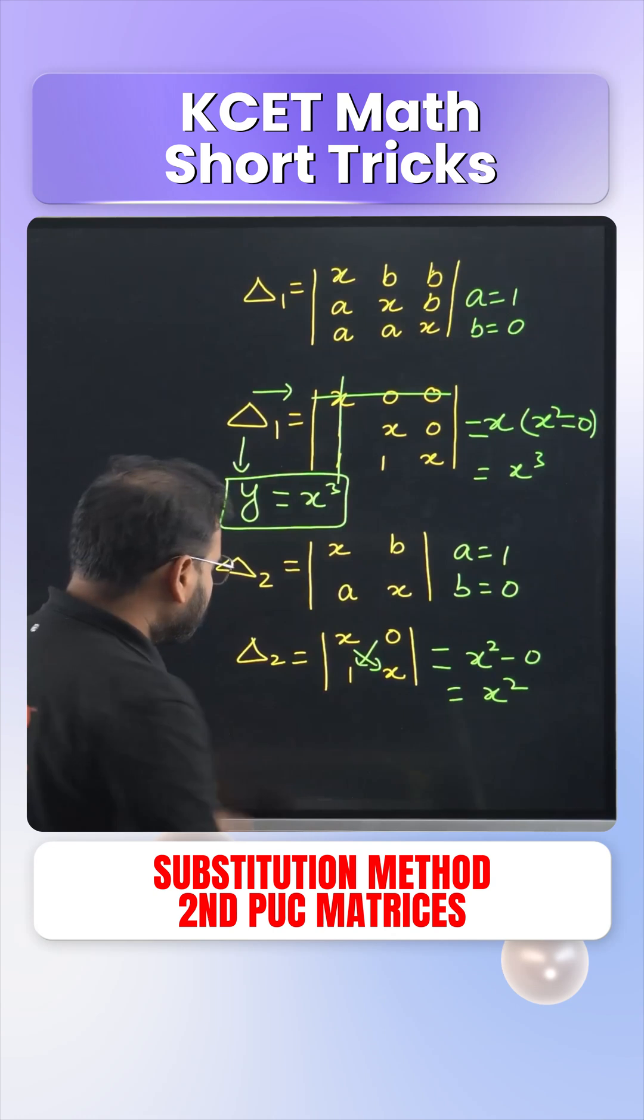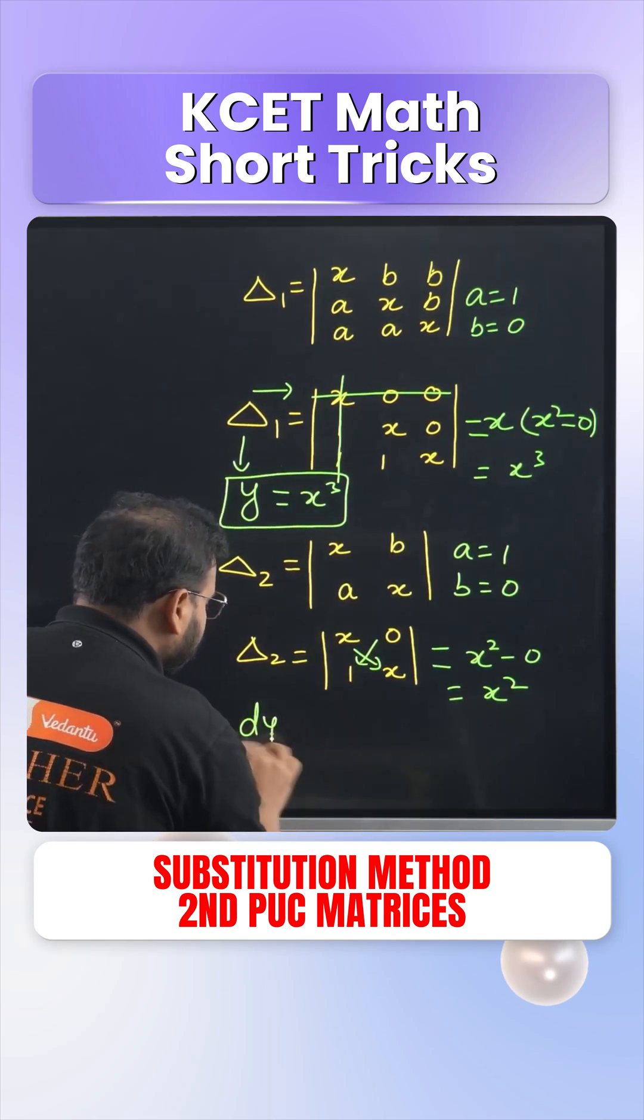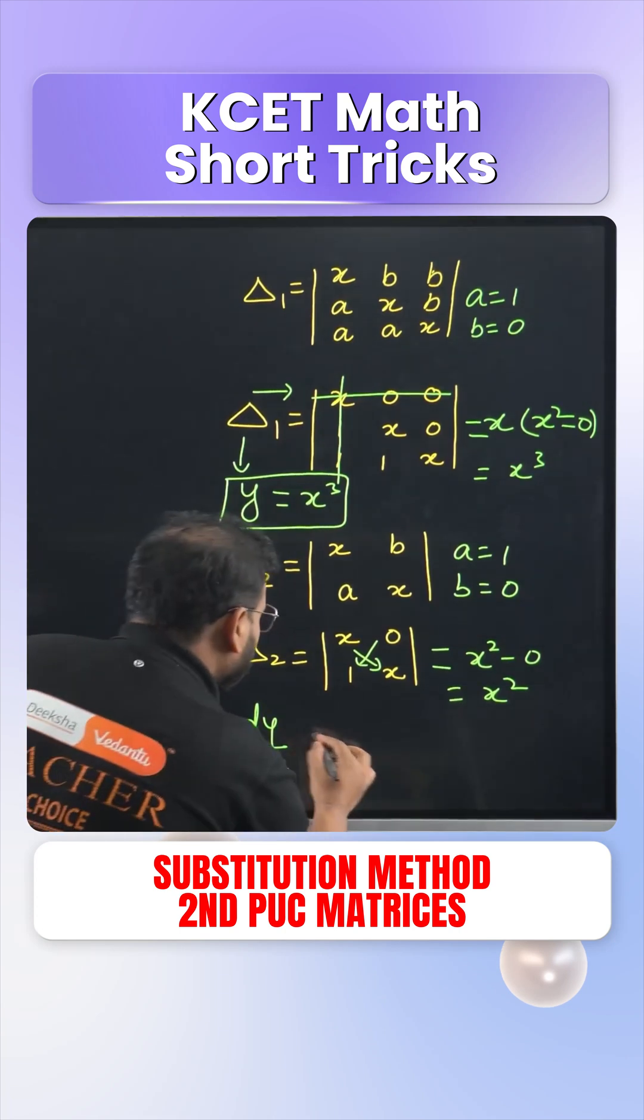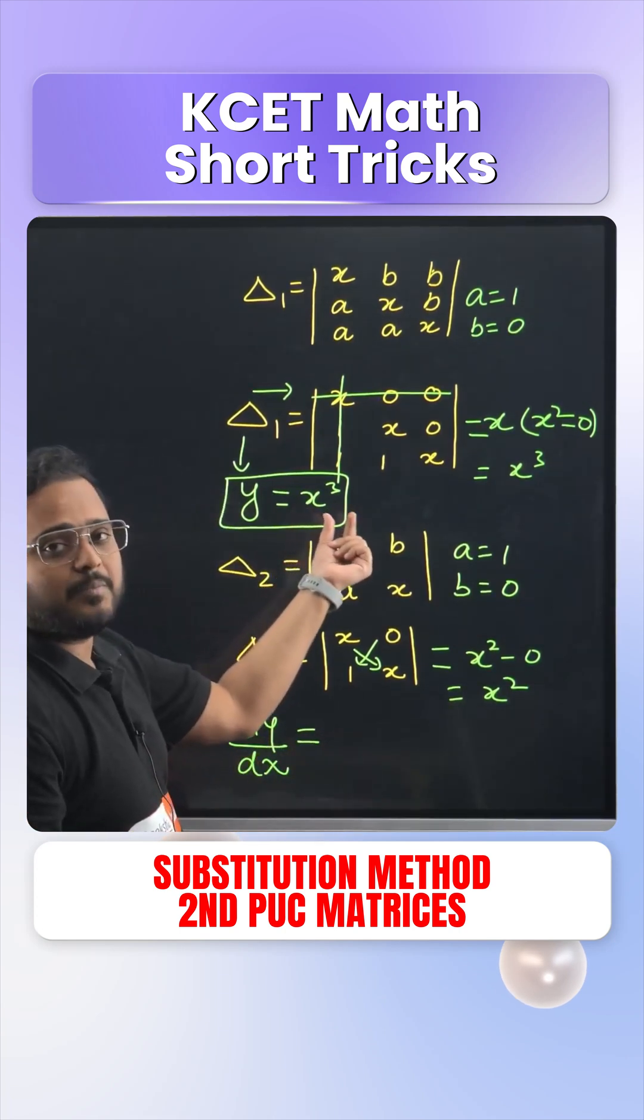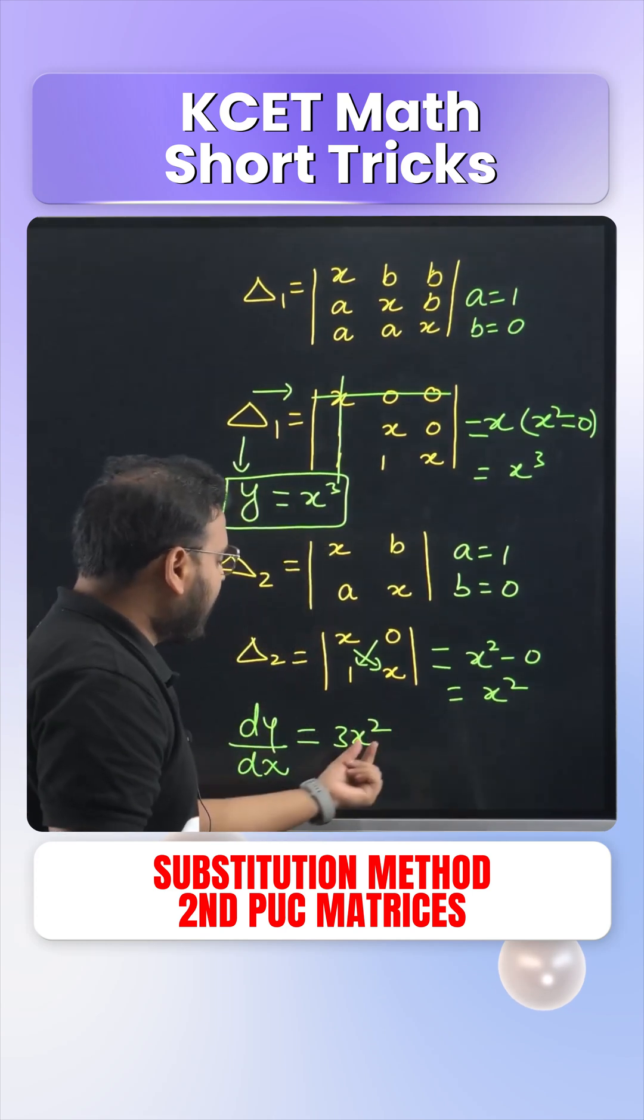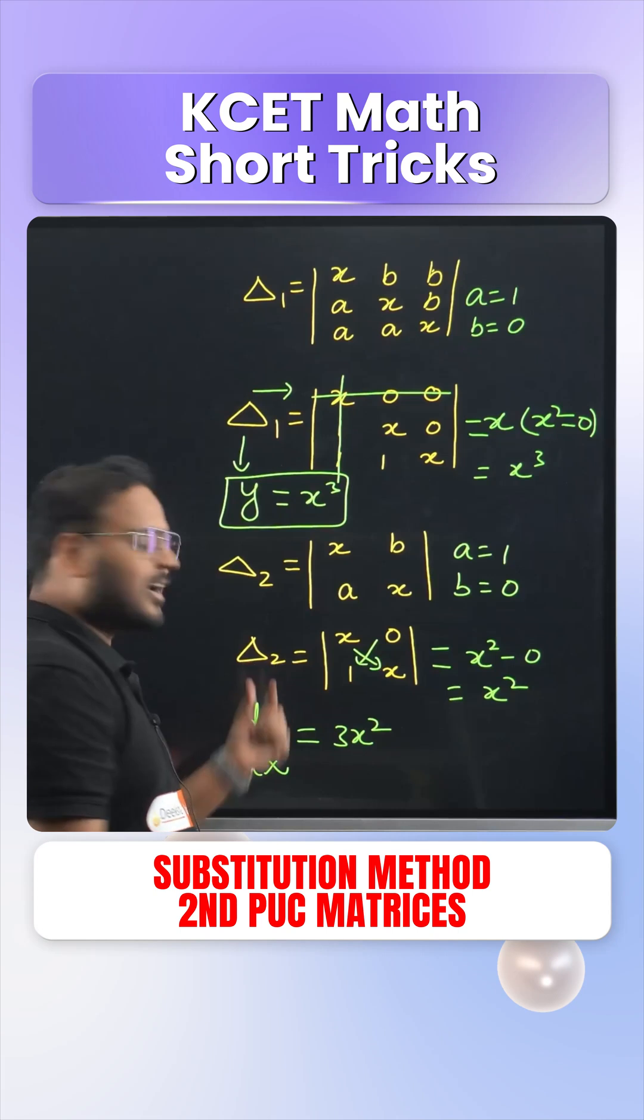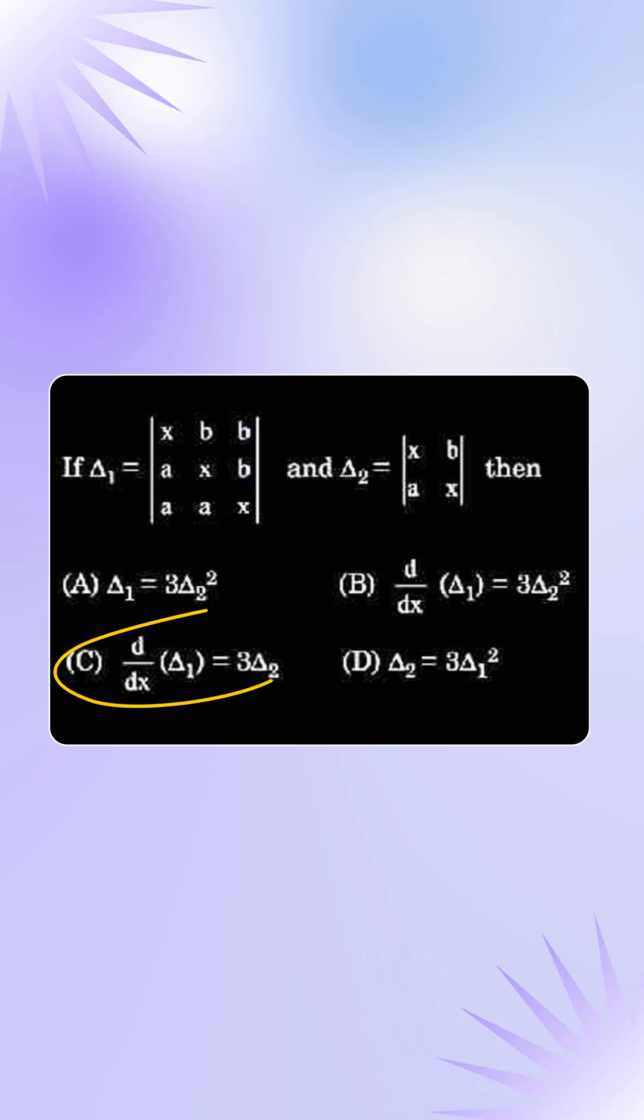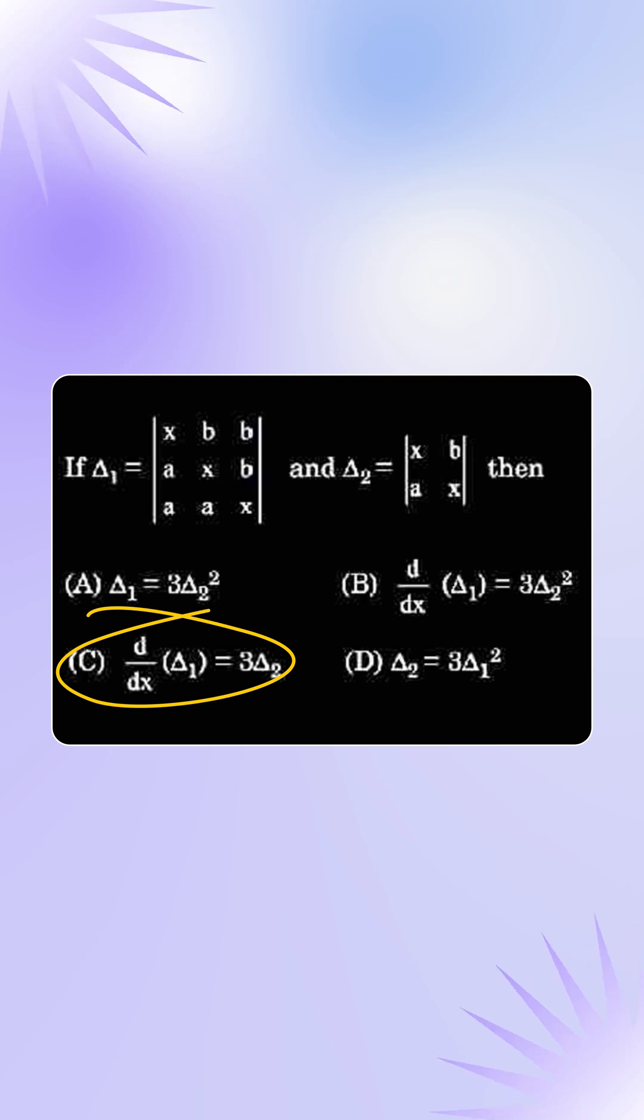Next step would be to simply differentiate this Y with the variable X writing dy by dx. You know that derivative of X cube is nothing but 3X square. 3X square and replacing this X square from here in terms of delta 2, I get the result as 3 delta 2 which is the option number C. So your correct answer is option C.